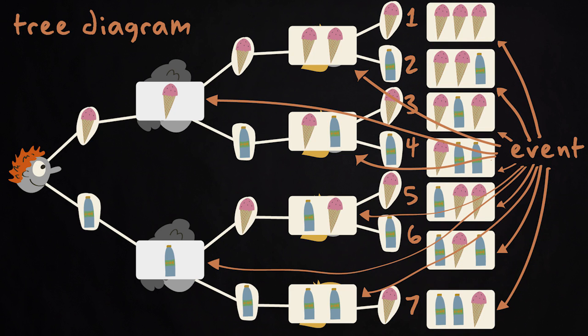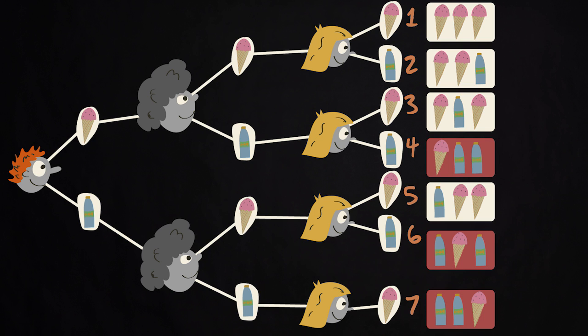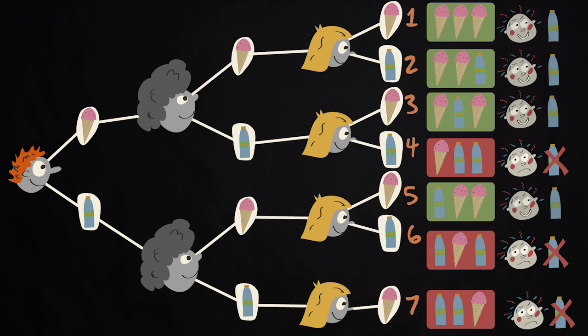An event is a subset of the sample space. In this particular case, you are of course interested in the events: unlucky, no soft drink left for you, versus lucky, you are able to buy a soft drink.